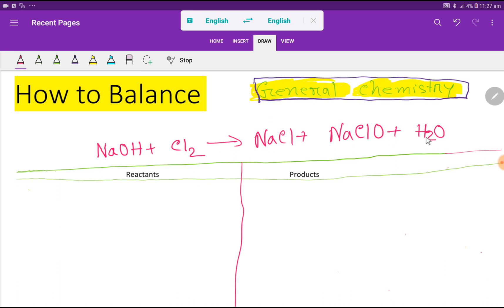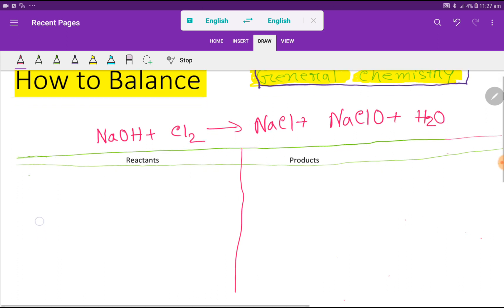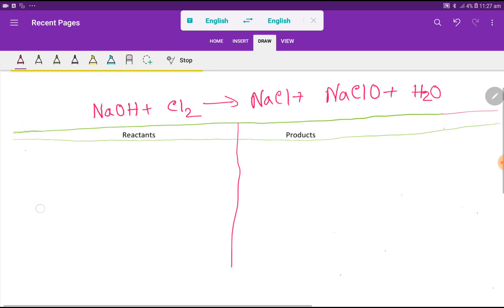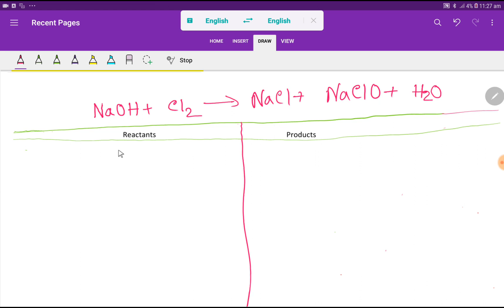This is water. To balance this reaction, first we have to draw a table like this. This is the reactant side and this is the product side. Now we need to calculate the number of atoms from both sides.